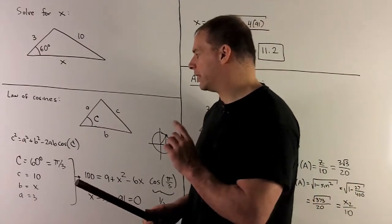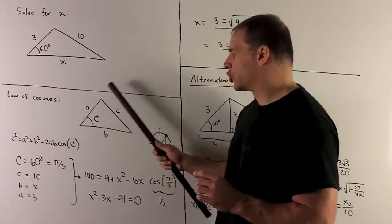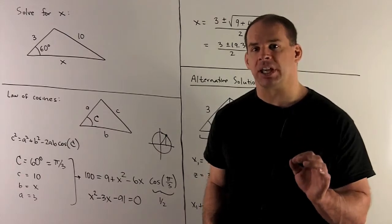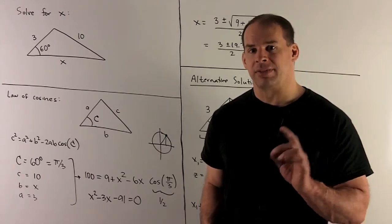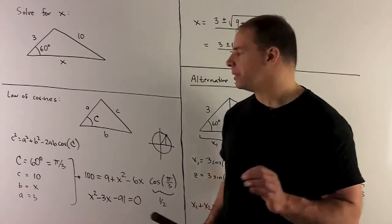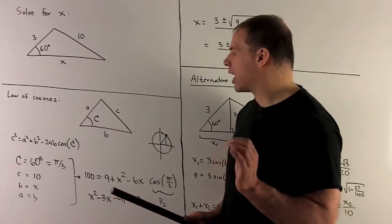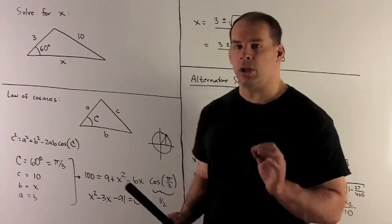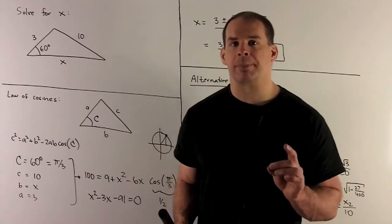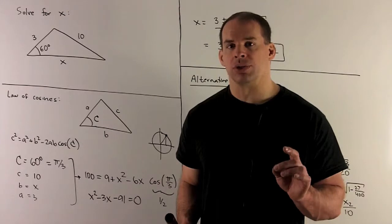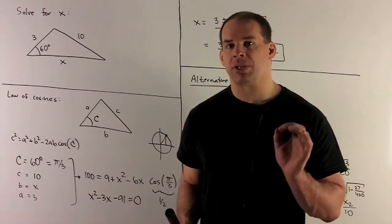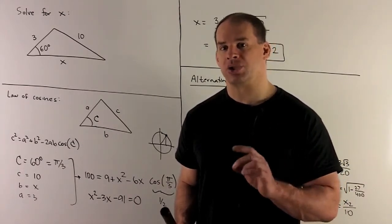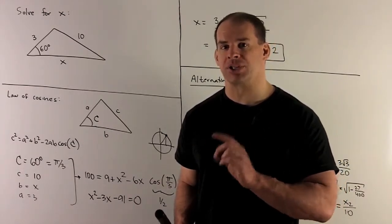We're going to have a triangle with an angle capital C, the length of its opposite side is going to be small c, and then the other sides will have lengths a and b. The law of cosines states: little c squared equals a squared plus b squared minus 2ab cosine of capital C.